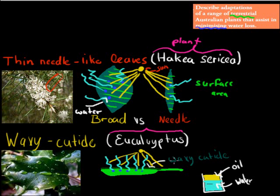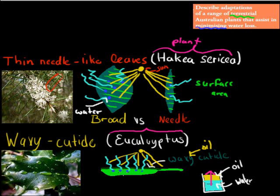What eucalyptus trees have is something called a waxy cuticle. Wax is essentially an oil, and if you remember, water and oil don't mix. So if there is water inside, it can't pass through the oil layer — the water would be stuck and wouldn't be able to come out through the top.